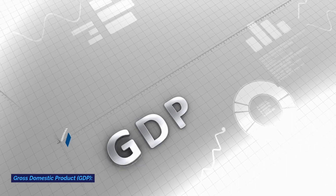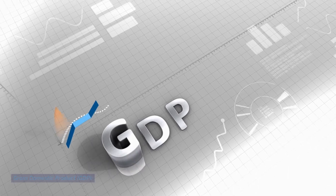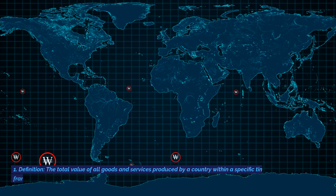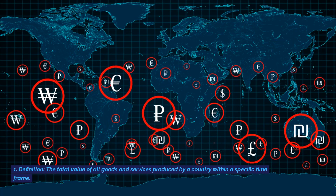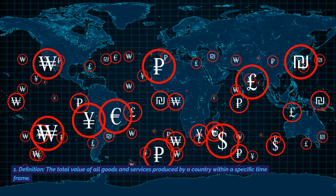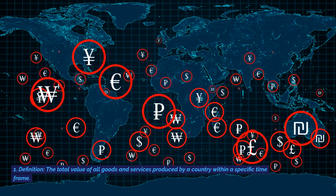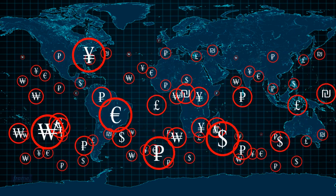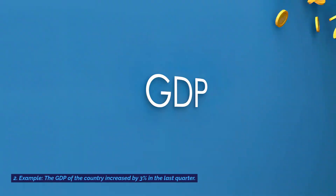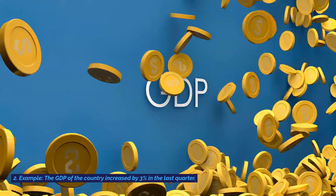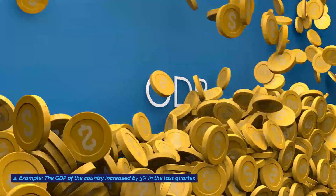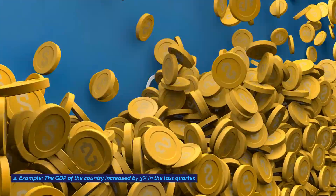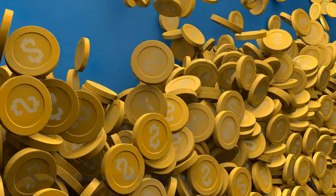Gross domestic product, GDP. Definition: the total value of all goods and services produced by a country within a specific time frame. Example: the GDP of the country increased by 3% in the last quarter.